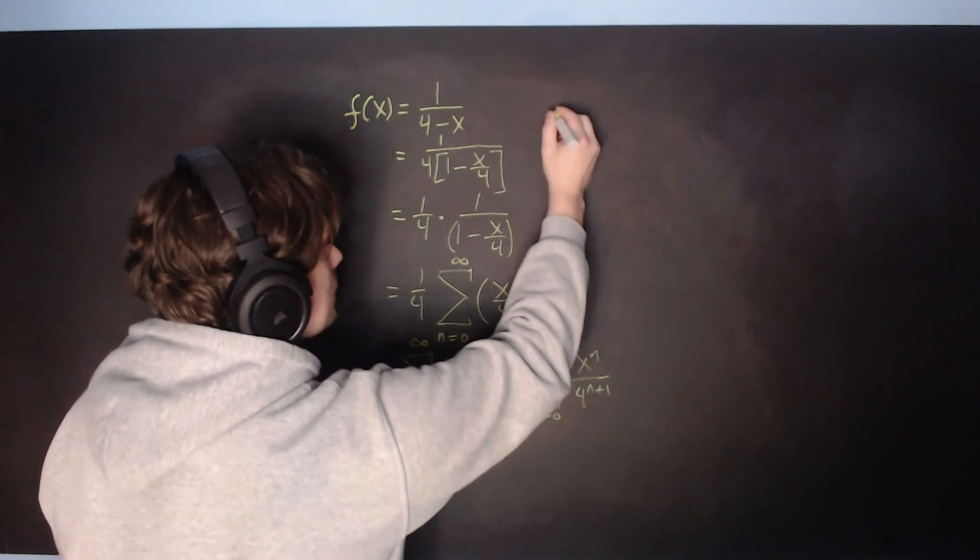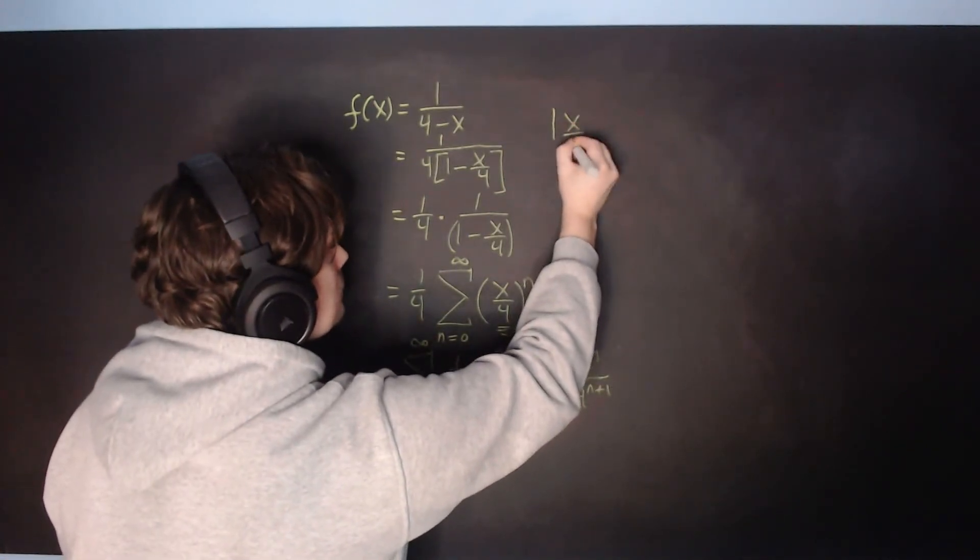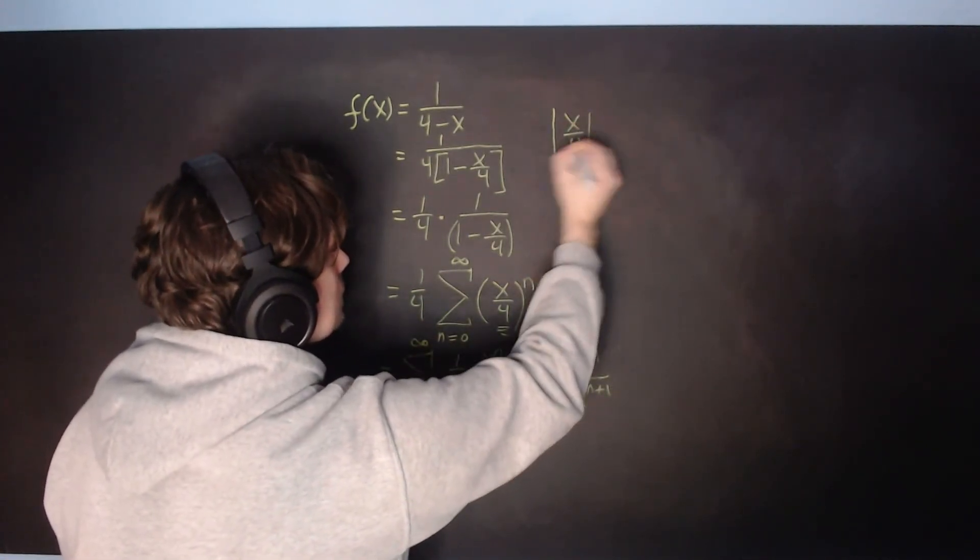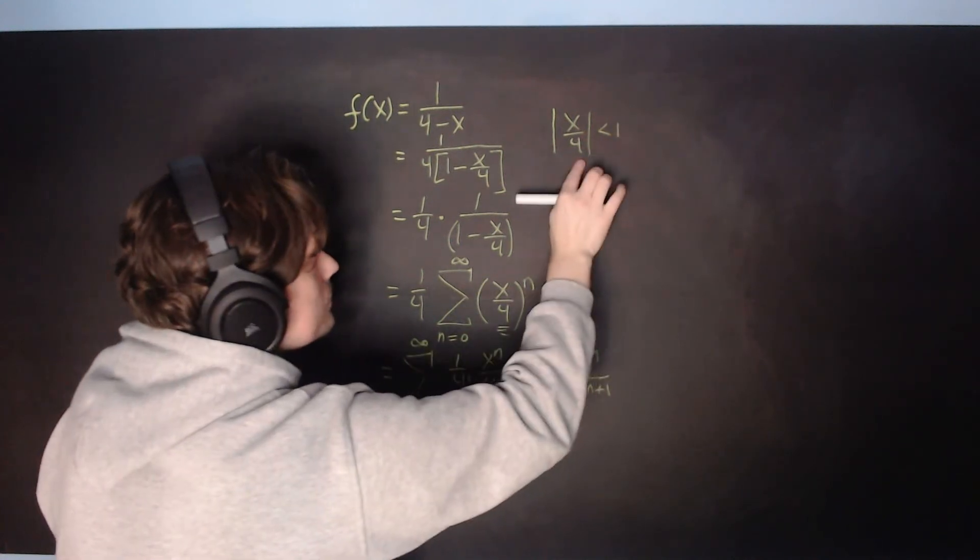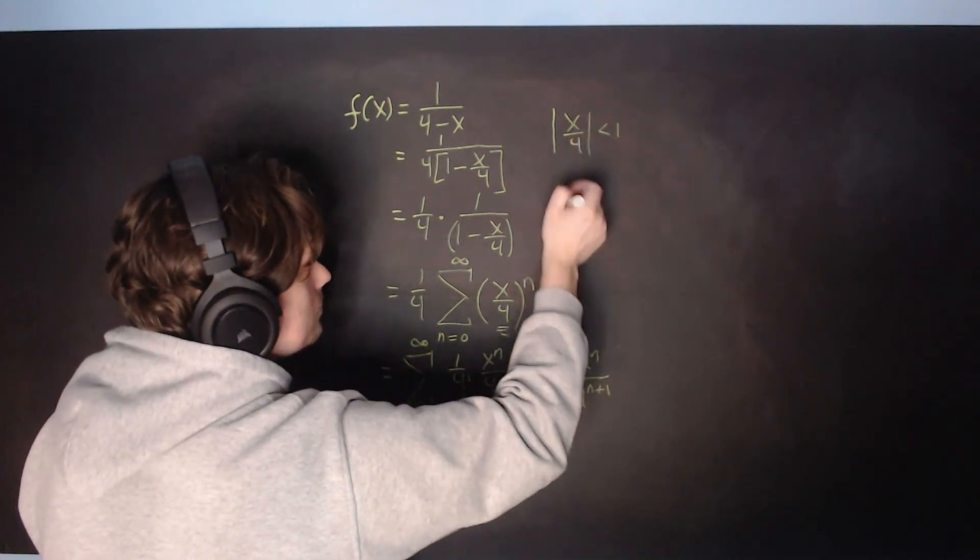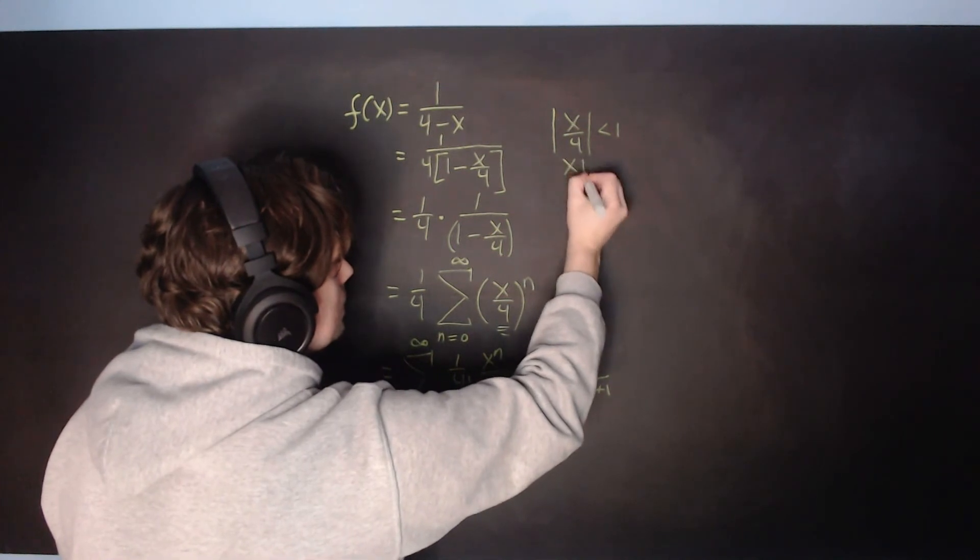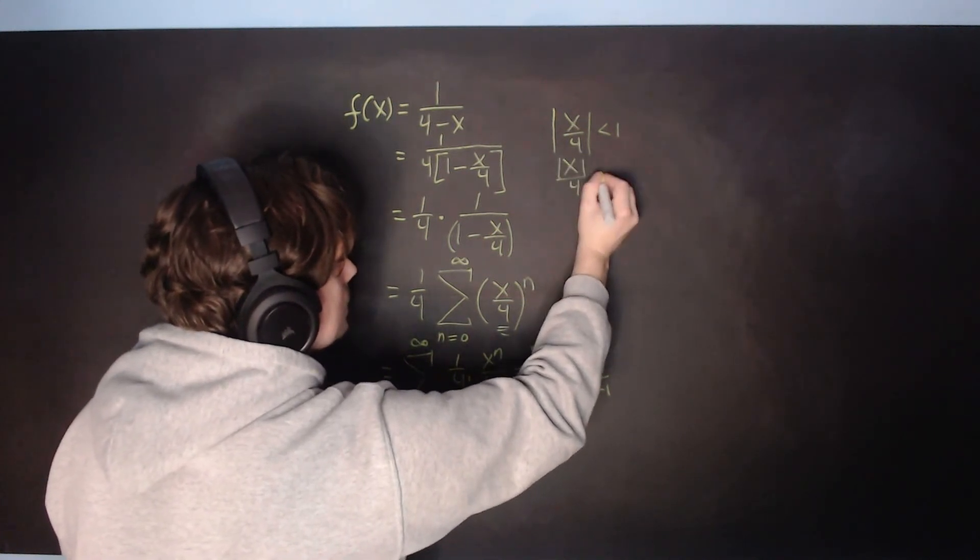So when I do that, it's going to look like this in practice. x over 4 in absolute value is less than 1. Notice 4 is already positive, so the 4 doesn't actually even need absolute value bars. So in other words, you could say it's just x over 4 is less than 1.